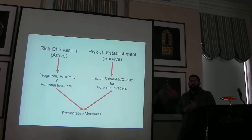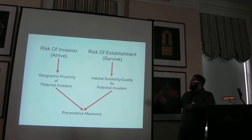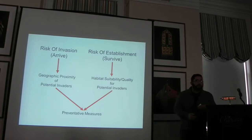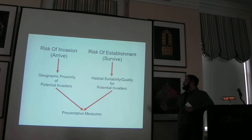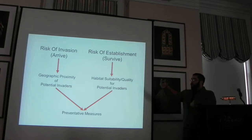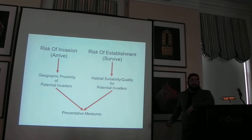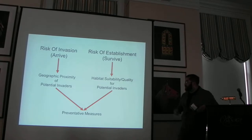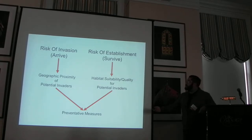There are two different questions you have to ask through two different lenses. For the risk of invasion, it's the geographic proximity of potential invaders to Brant Lake. For the risk of establishment, it's the habitat suitability quality — where are they located next to Brant Lake, and do they have the potential to create a nuisance population? Both of these are integrated with preventative measures.